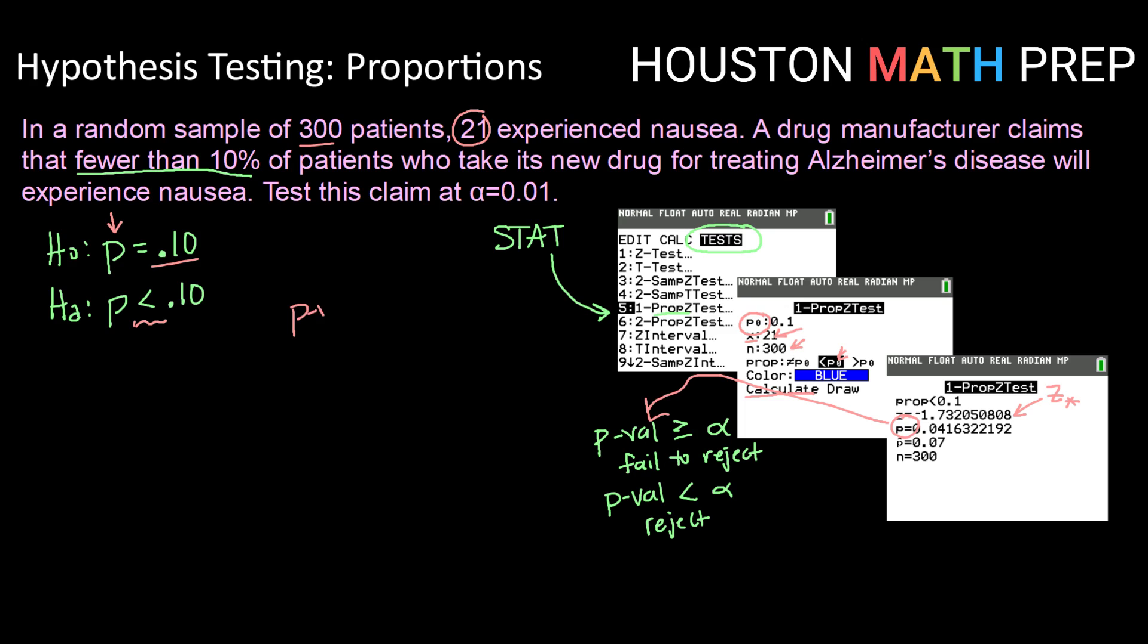So now that we have our p value equal to 0.0416 and so on, we want to compare that to our alpha. The alpha we were told to use is 0.01. So in this case, alpha of 0.01, that is the smaller value, so our p value is greater at 0.04. When our p value is greater, that means we do not have enough evidence to reject. So we are going to fail to reject.